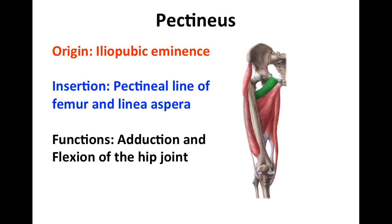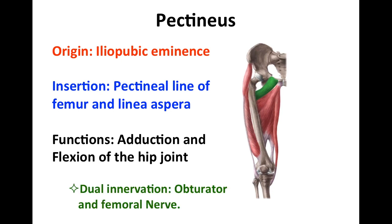It's important to remember that this muscle is dually innervated, so it's innervated by the obturator nerve and the femoral nerve. The obturator nerve is the primary nerve that innervates the medial thigh muscles.